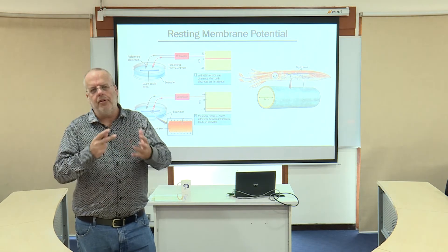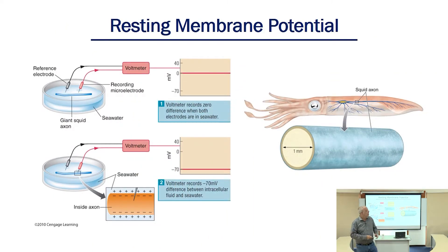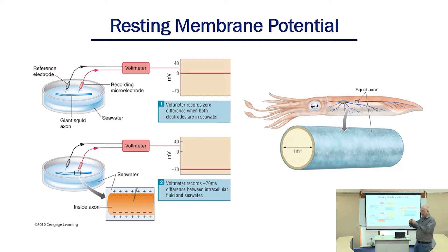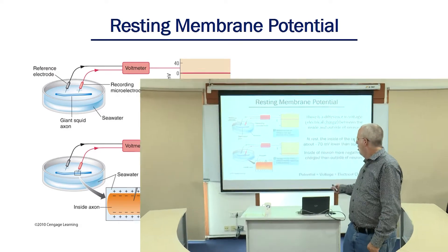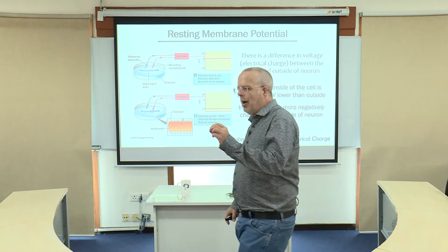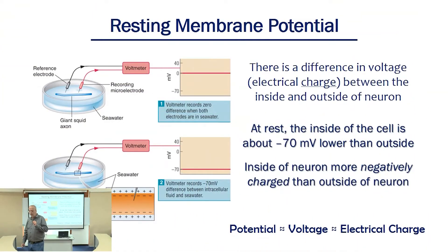So how did they do this? They used something called a voltmeter — it measures voltage. When they take the two leads of the voltmeter and place them both within the fluid in the Petri dish containing the neuron segment, there's no difference in electrical charge between those two leads, so we see an output of zero. But if you take one lead and keep it in the solution, and place the other lead inside of the neuron, we find that the inside of the neuron is electrically negative relative to the outside. This seems to be the case for virtually every neuron recorded from — the inside is about negative 70 millivolts more negative.